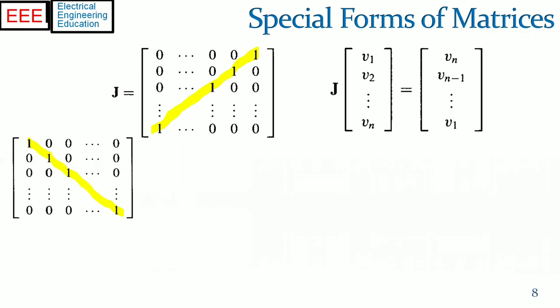Note that since J squared is equal to the identity matrix, then J is its own inverse. The effect of multiplying a vector v by the exchange matrix J is to reverse the order of the vector. This transformation has many applications in prediction and lattice filter implementations.